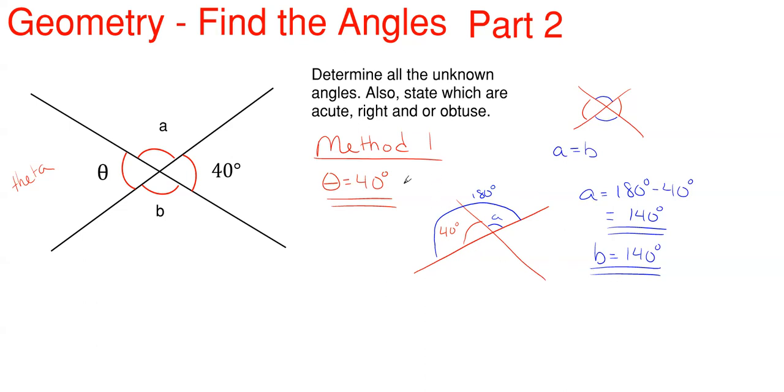That was our first method. Now let's write out what our angles are. Acute is anything less than 90 degrees. A right angle is anything equal to 90 degrees. And obtuse is anything larger than 90 degrees. So theta is an acute angle because it's less than 90 degrees. It's at 40. And A and B are obtuse angles because both of them are greater than 90 degrees. I don't have any right angles because nothing is exactly 90 degrees.